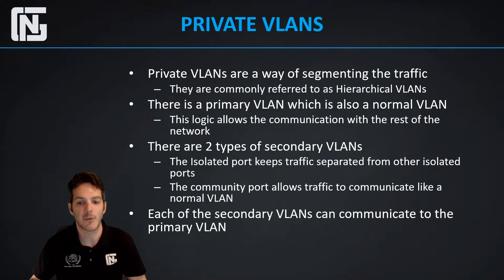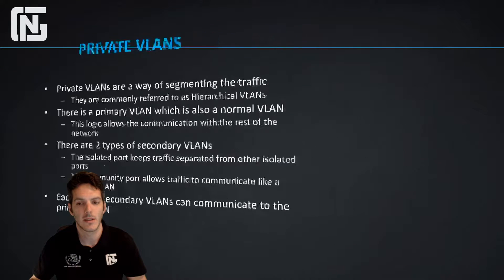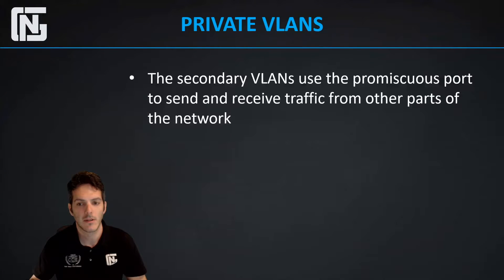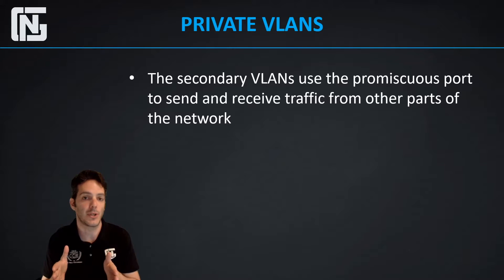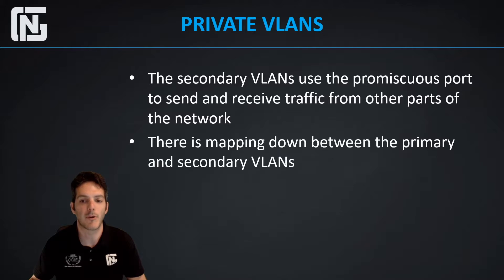Each of the secondary VLANs can communicate with the primary VLAN. The secondary VLANs use the promiscuous port to send and receive traffic from other parts of the network. The promiscuous port is a port or communication method that is able to talk with either the isolated or the community — it can talk to both. There is a mapping between the primary and secondary VLANs, so when you go to configure this you reference the primary VLAN and map it to the specific secondary VLANs. You can have several secondary VLANs if you choose.